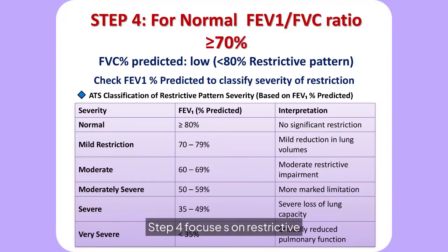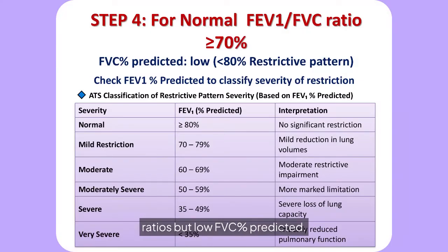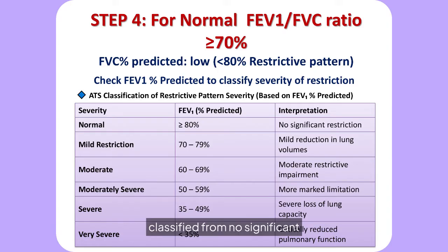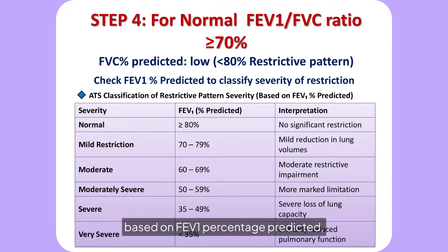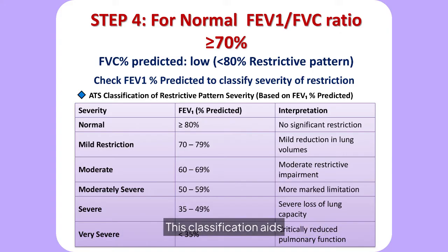Step four focuses on restrictive patterns with normal FEV1/FVC ratios but low FVC percent predicted. The severity of restriction is classified from no significant restriction to severe restriction based on FEV1 percentage predicted, according to the American Thoracic Society (ATS) guidelines. This classification aids in understanding the extent of lung volume reduction.